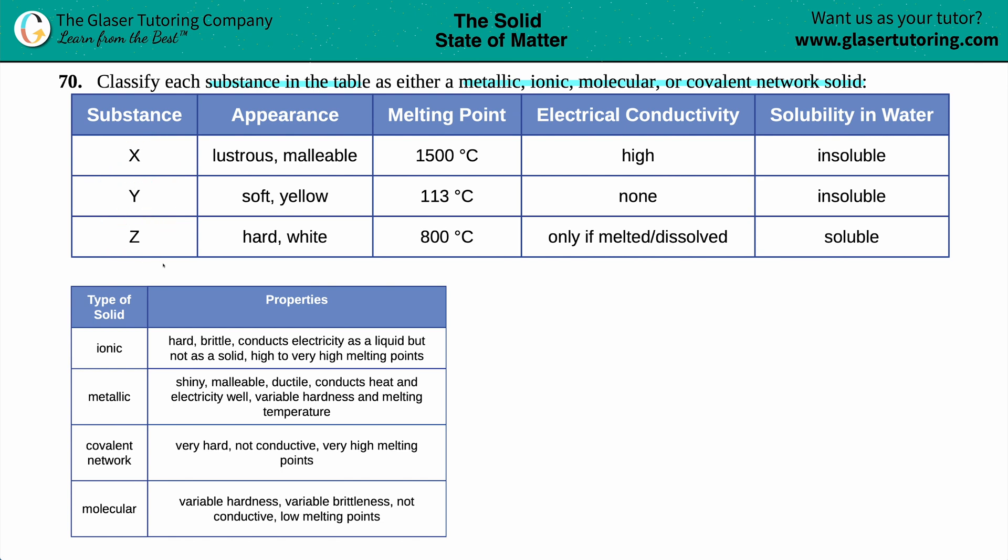We just have to figure out which one of these substances is the metallic, the ionic, molecular, or covalent network solid. In order to do this, we have to know and memorize the properties of each crystalline solid. There's four different types of crystalline solids.